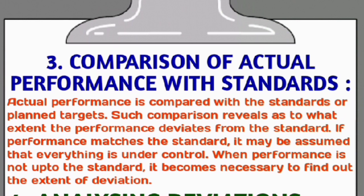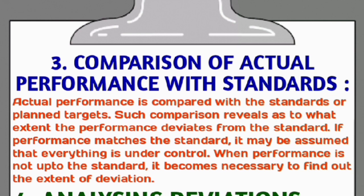Actual performance is compared with standards or planned targets. Such comparison reveals the extent to which performance deviates from the standard. If performance matches the standard, it may be assumed that everything is under control. However, when performance is not according to the standard, it becomes necessary to find out the extent of deviation.